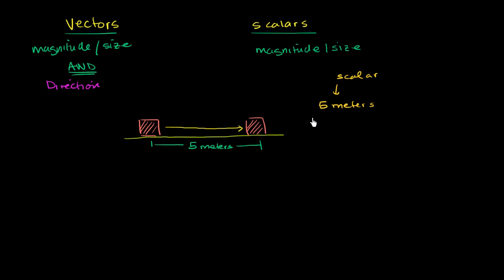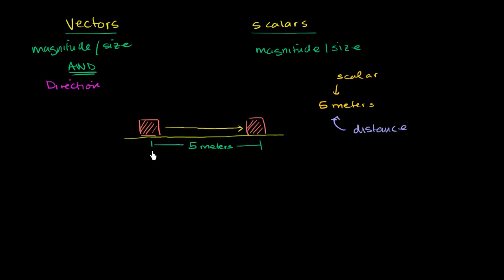When we're referring to how much something has changed its position and we don't give a direction, we're talking about distance. How far of a distance has something traveled? So we could say that this brick, because of my picking it up and moving it, has moved a distance of five meters.